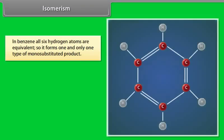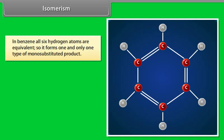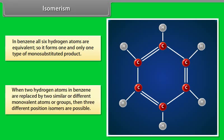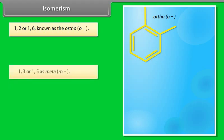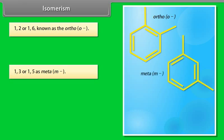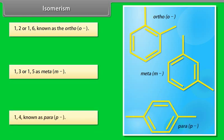Isomerism. In benzene, all six hydrogen atoms are equivalent, so it forms one and only one type of mono-substituted product. When two hydrogen atoms in benzene are replaced by two similar or different monovalent atoms or groups, three different position isomers are possible: first, 1,2 or 1,6, known as ortho; second, 1,3 or 1,5, known as meta; and the third, 1,4, known as para. These are called di-substituted compounds.